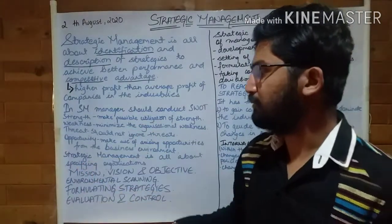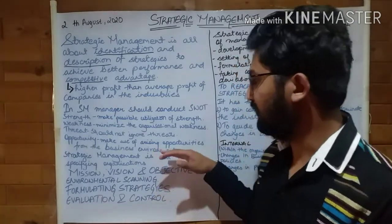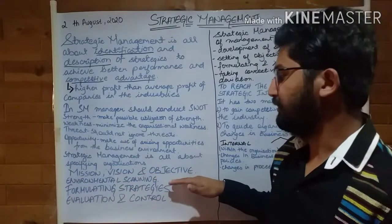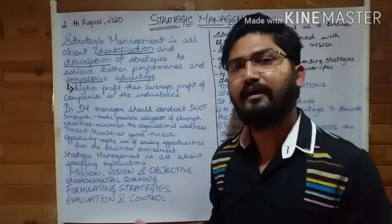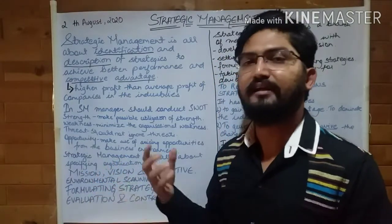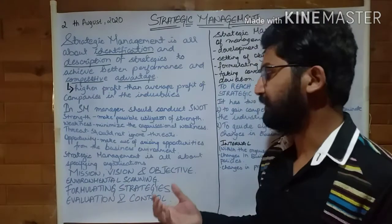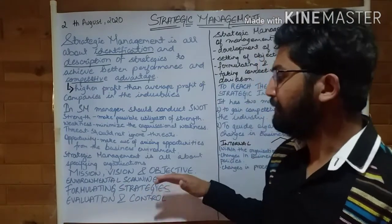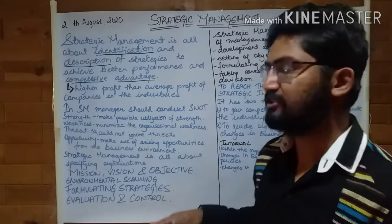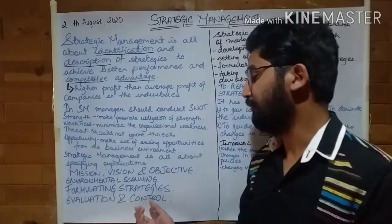Strategic management is all about specifying your vision, your mission and your objectives. The first step is to describe your company's mission, vision and objectives. After that, you will do environmental scanning, then formulate strategies, and then evaluation and control.